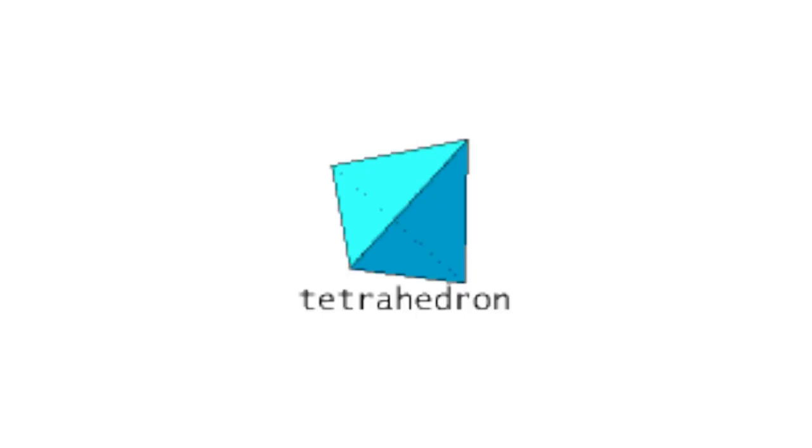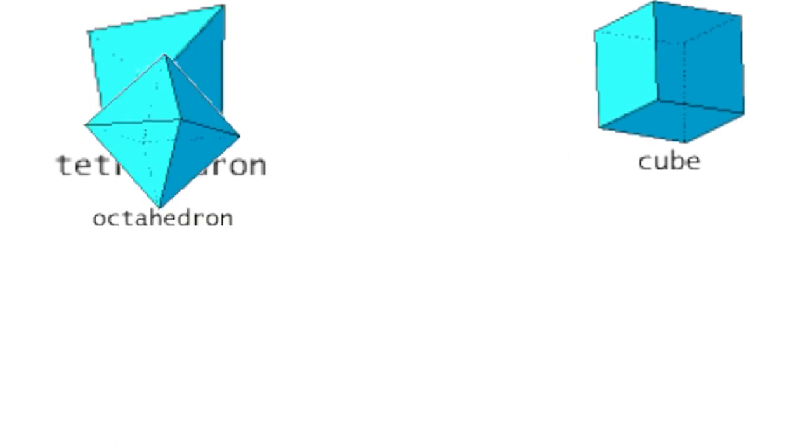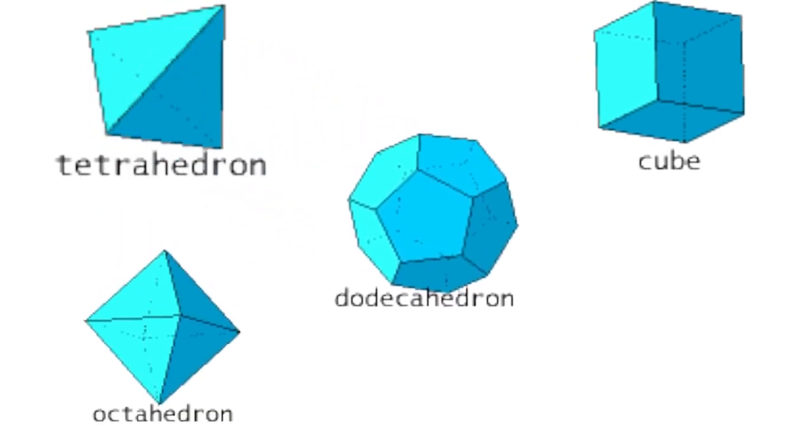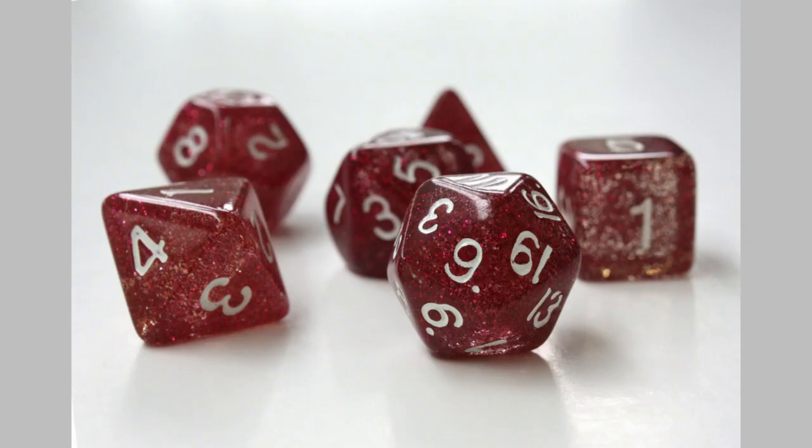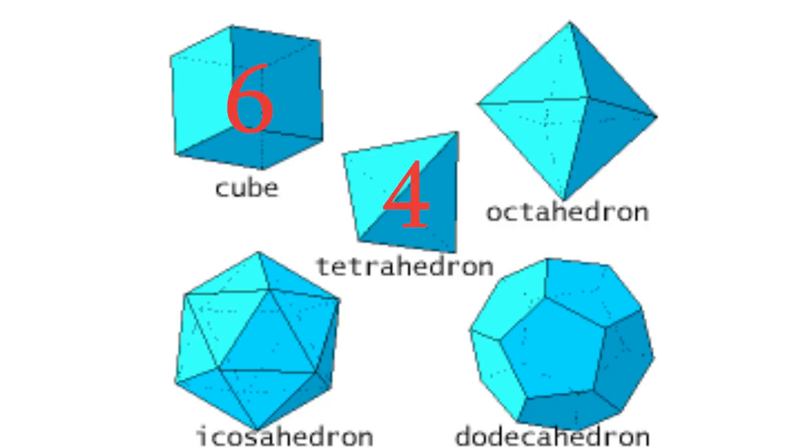They are the tetrahedron, the cube, the octahedron, the dodecahedron, and the icosahedron. Some of you might recognize these as the shape of some of the dice used in role-playing games, namely the 4, 6, 8, 12, and 20-sided dice.